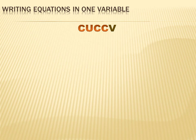Now let's take the translation of English into algebra one step further. We're going to use a strategy called CUCCV to help us translate a word problem into algebra. A lot of word problems have a whole bunch of words that aren't really relevant to the solution — they're just there to confuse you. So we're going to use CUCCV to help us focus in on what's really important and what the question is really asking us.